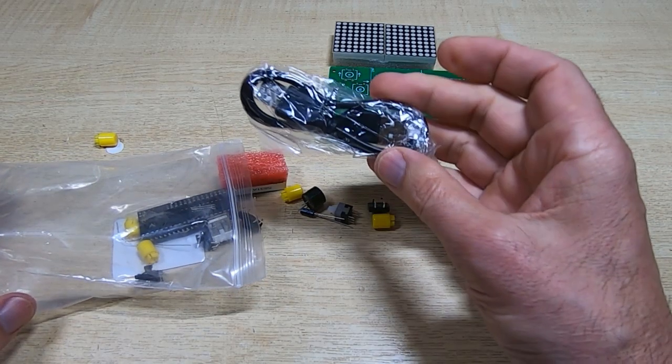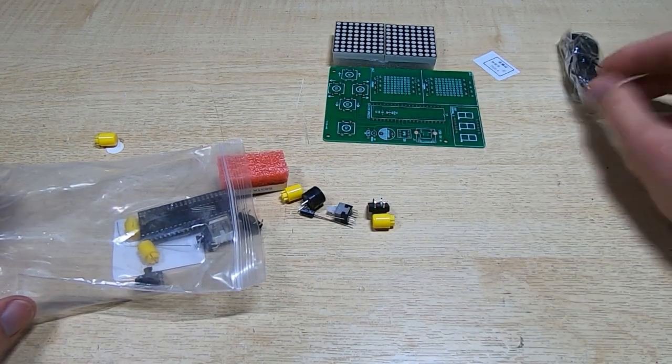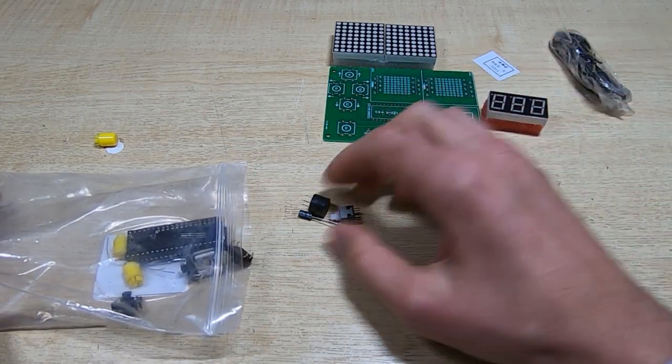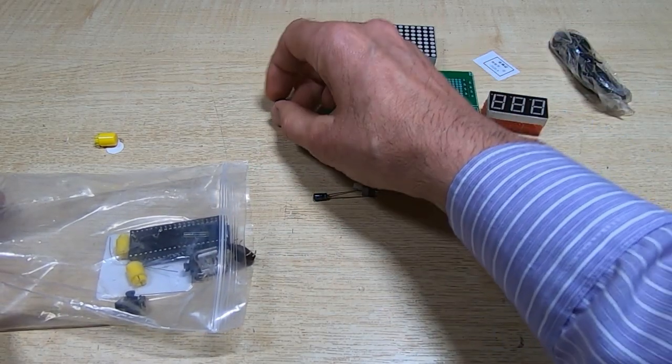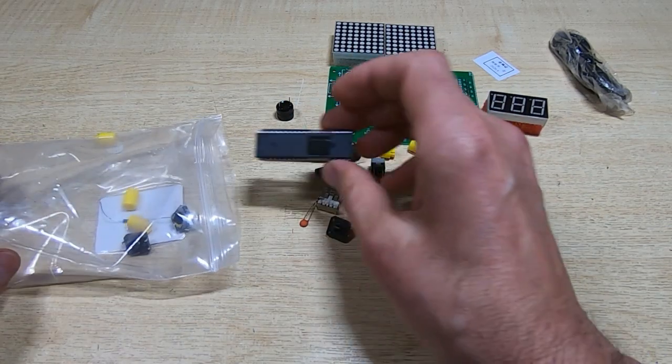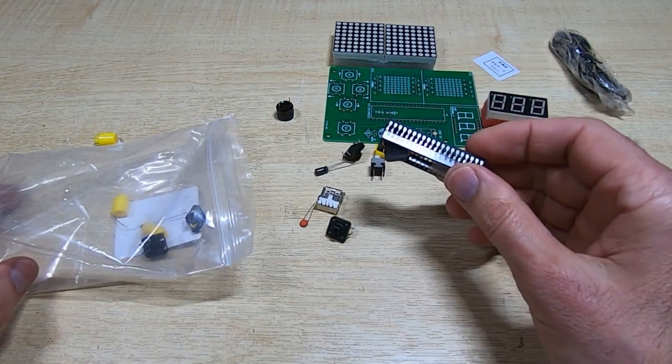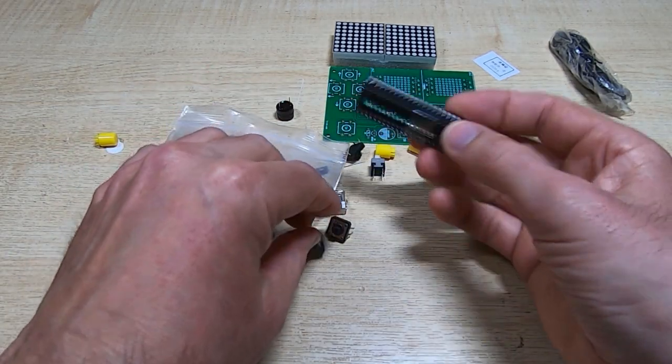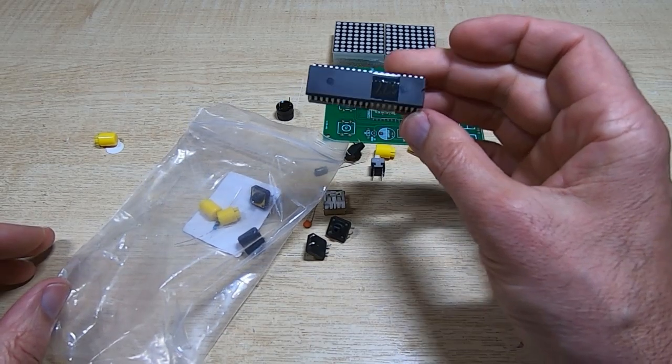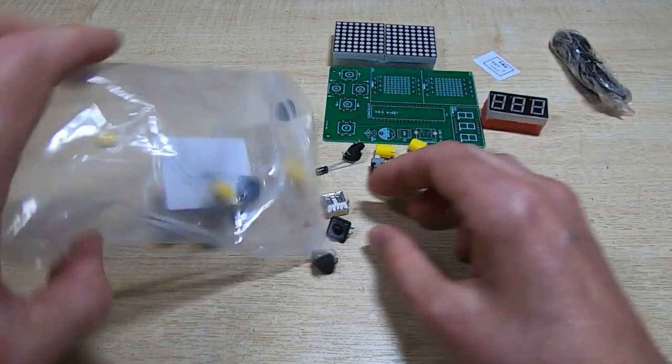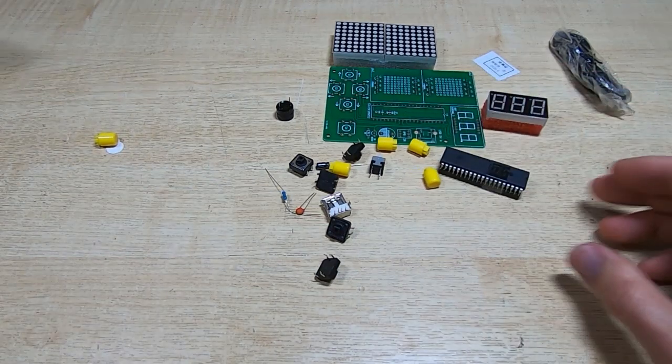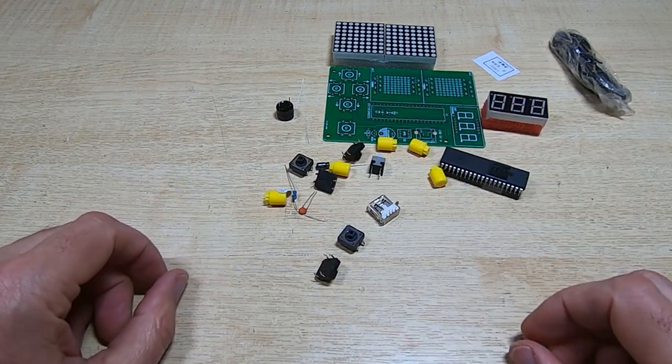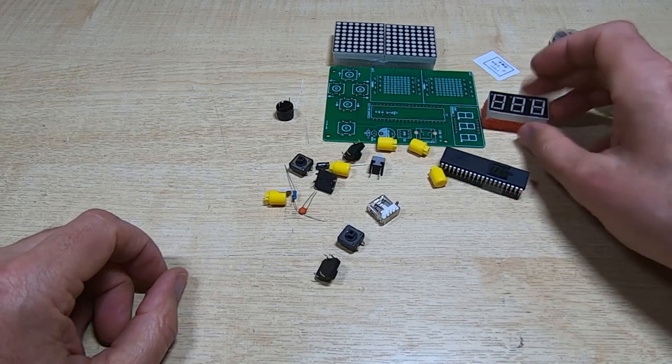USB cable, no idea what that's for, possibly to just power it. Some buttons, another display, sounder, capacitors, the all important microprocessor. Very strange way to package that, good way to damage it, but hopefully it will be fine. And just a few more buttons and switches.